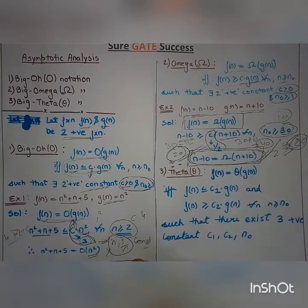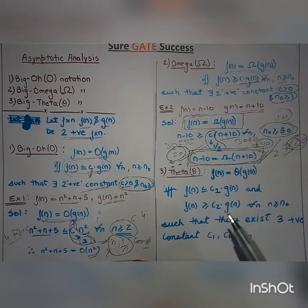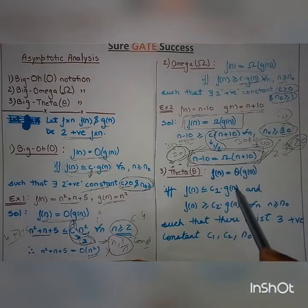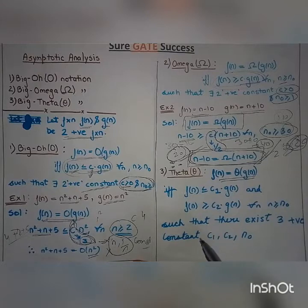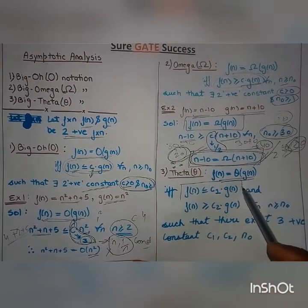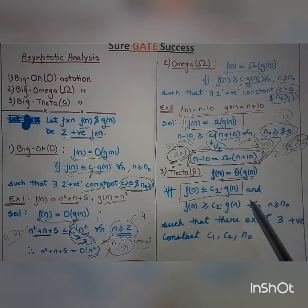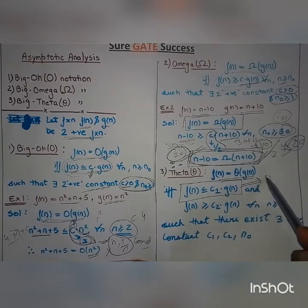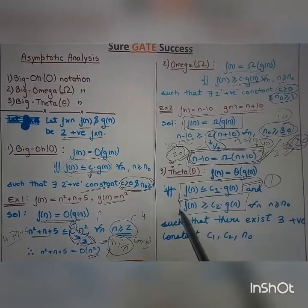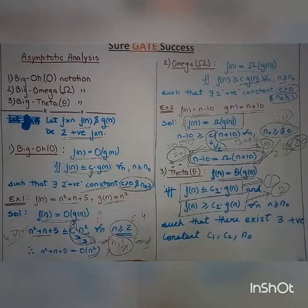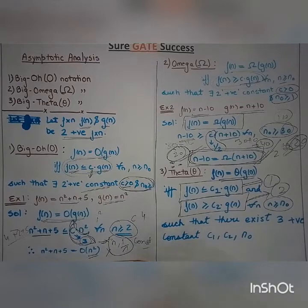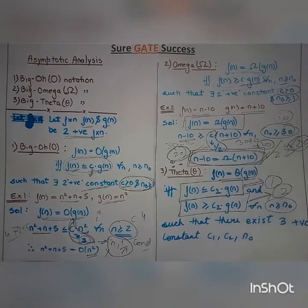The third notation is Theta notation. To prove Theta, there are two conditions — we can say it is a mixture of Big O and Omega. f(n) is Theta of g(n) if and only if f(n) ≤ c₁·g(n) (first condition) and f(n) ≥ c₂·g(n) (second condition). There will be three constants: c₁, c₂, and n₀.